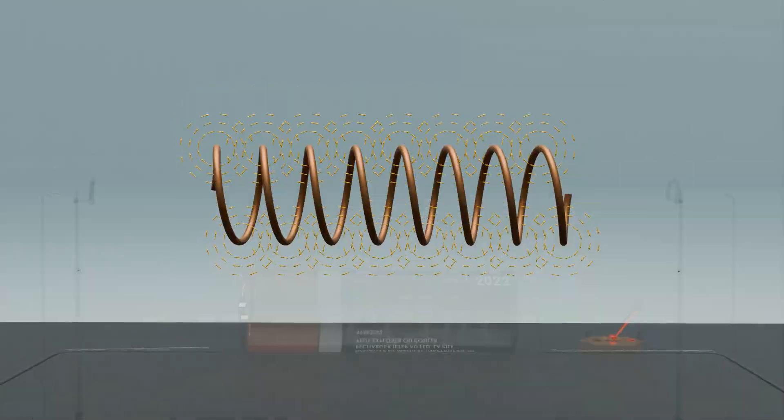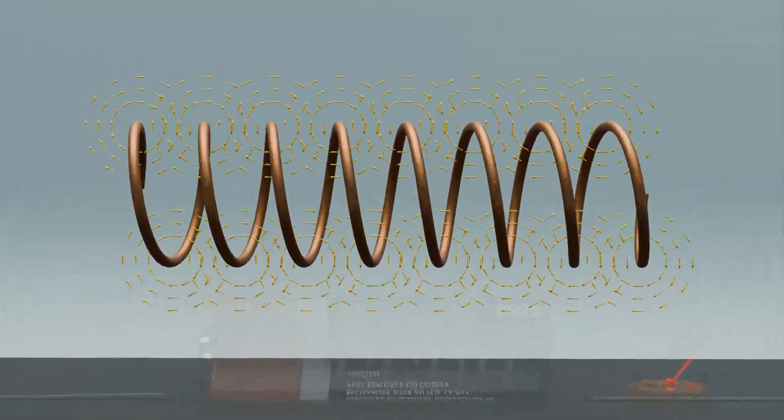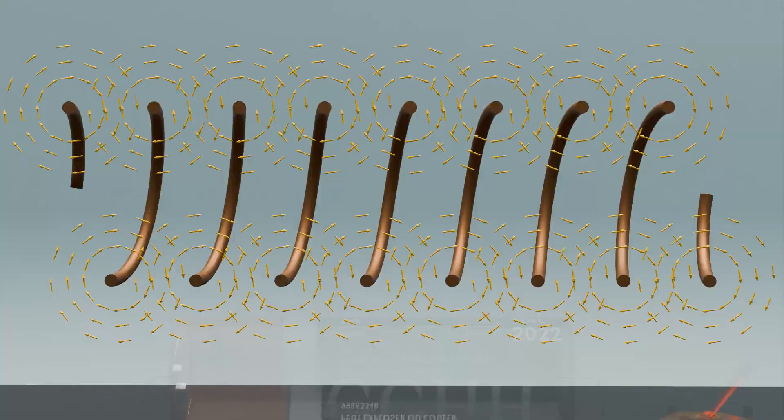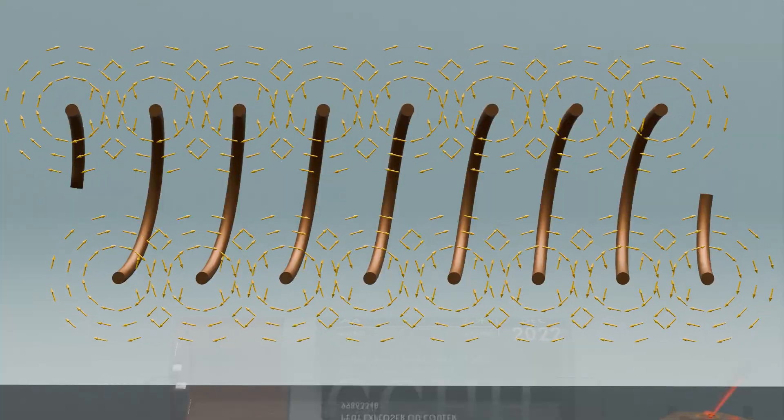Each turn of the coil generates its own magnetic field due to the current flowing through it. These fields are represented by circular lines around the wire.